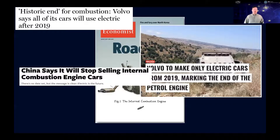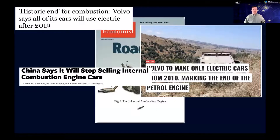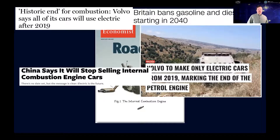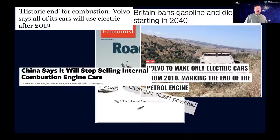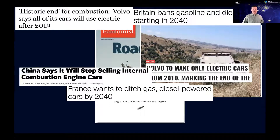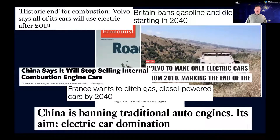More headlines: governments and countries are getting in on the action. China says it will stop selling internal combustion engine cars. Britain bans gasoline and diesel starting in 2050 — and actually their ban has become even more strict since then, with the date moved up. France wants to ditch gas and diesel powered cars by 2040. China again is banning traditional auto engines with an aim toward electric car domination.